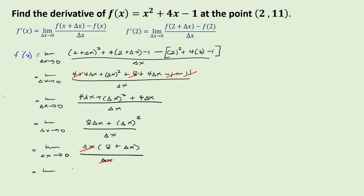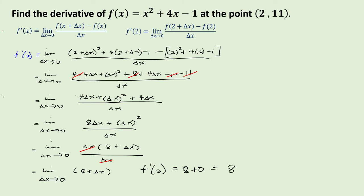We have the limit of (8 plus delta x) as delta x approaches 0. Evaluating, f prime of 2 equals 8 plus 0, which is 8. Therefore, the slope of the tangent line at x equals 2 is 8.